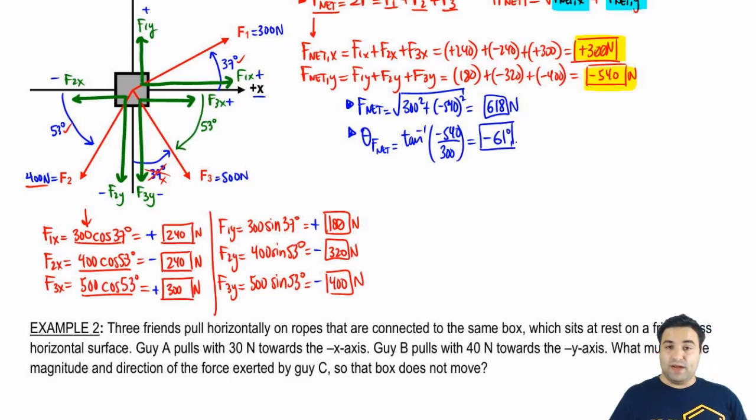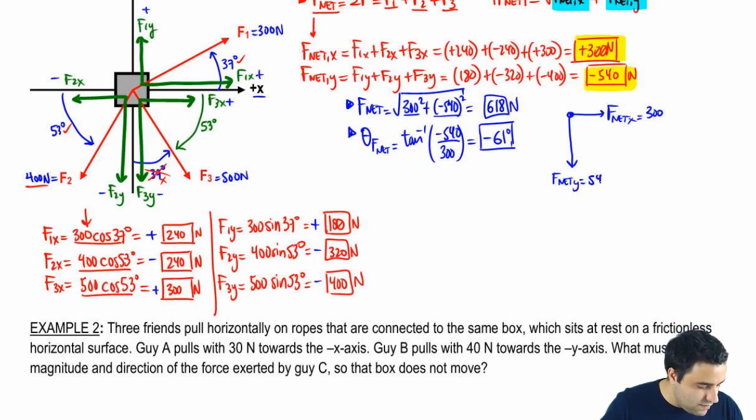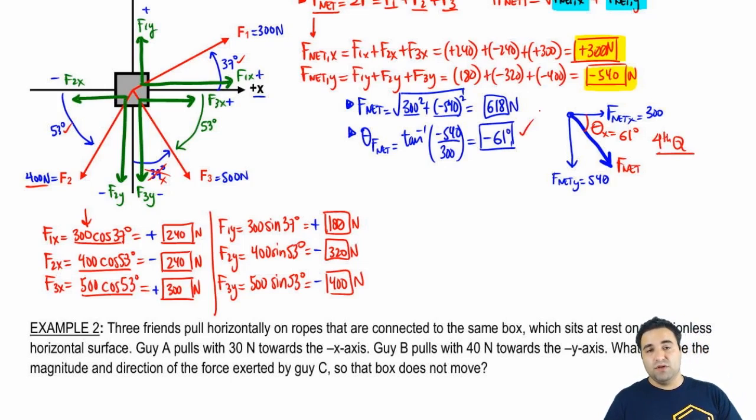Now, remember, with the arctangent, you have to make sure it's in the right place. And the way we can do that is by drawing. So if the f net is 300 in the x and 540 in the y, it looks like this. f net x is 300. And then I'm going to draw this one a little longer. f net y is 540. I didn't put a negative because it's already pointing down. And that means that my net force actually looks like this. And the angle is going to be against the x-axis over here, 61 degrees. I don't have to put a negative because I'm showing the exact position of that angle. And this is the fourth quadrant. And the arctangent function works just as well in the fourth quadrant. And it doesn't require any touch-ups. So we'll leave it alone.